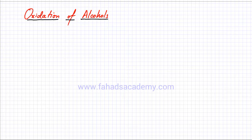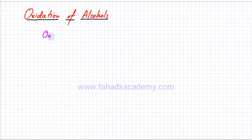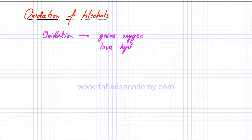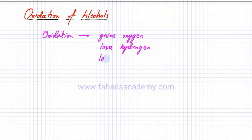We will now study the oxidation of alcohols. Before studying what is meant by oxidation of alcohols, we first have to define what oxidation is. Oxidation is defined as whenever a substance gains oxygen — that is called oxidation. There's another definition where the substance loses hydrogen, which is also described as oxidation. There's also a third definition based on losing or gaining electrons: whenever a substance loses electrons, that is also described as oxidation.